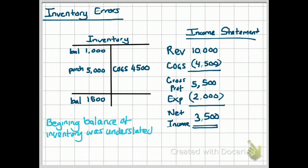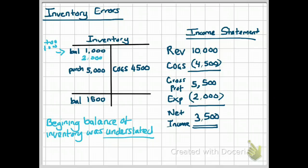Finally, let's look at what would happen if the beginning balance of inventory was understated. We're going to use the same example. Understated means that the balance in our beginning inventory is too low. The correct balance should have been $2,000. If our correct balance is $2,000, our cost of goods sold should have been $2,000 plus $5,000 minus $1,500, giving us $5,500.